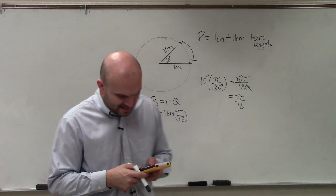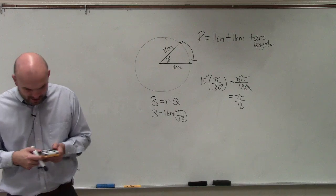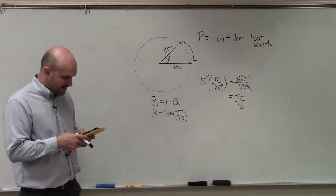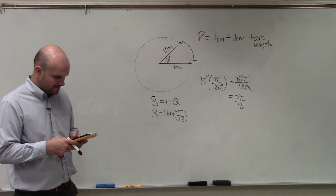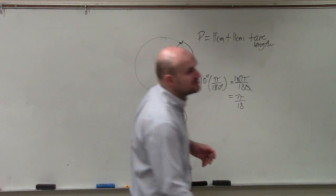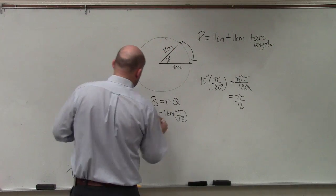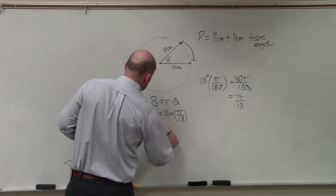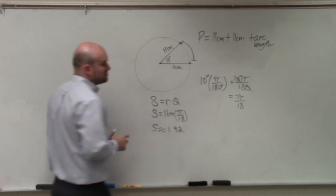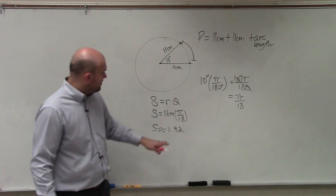So I just do 11 times pi, because those are both in the numerator, and then I divide that by 18. And I get 1.92 approximated. So I rounded it to the 100th position.